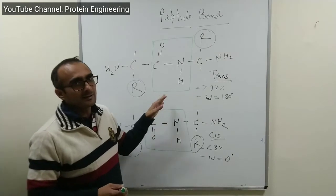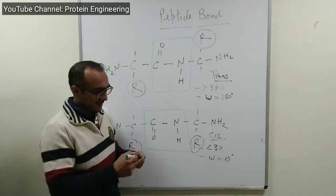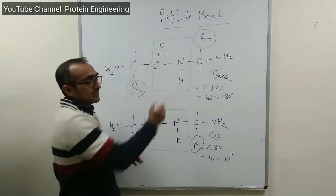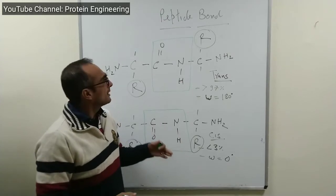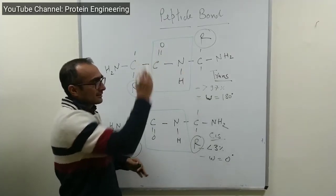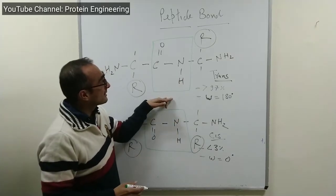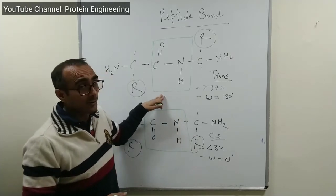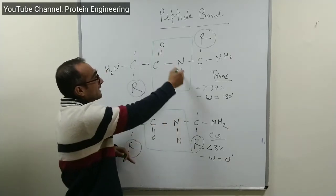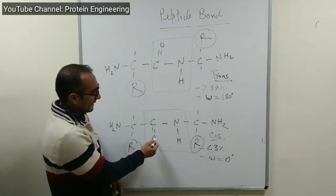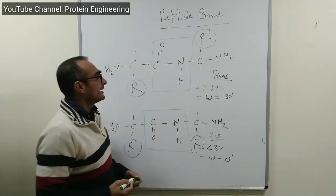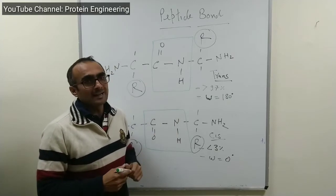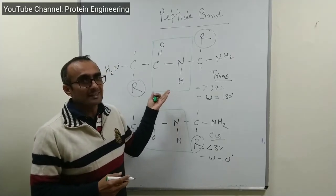The peptide bond is a C-O-N-H bond between two amino acids. The configuration of the carbonyl oxygen and the N-H group can have two possibilities. In one case, C=O and N-H go in opposite directions in opposite planes — that kind of peptide bond is called a trans peptide bond. Alternatively, C=O and N-H may lie on the same side in the same plane — that is called a cis peptide bond. In nature, in proteins, more than 97 percent of peptide bonds exist in the trans configuration because it is more stable.